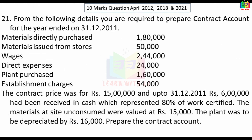Next problem: from the following details, prepare a contract account for the year ended 31-12-2011. The figures are: materials directly purchased Rs.1,80,000; material issued from stores Rs.50,000; wages Rs.2,44,000; direct expenses Rs.24,000; plant purchased Rs.1,60,000; establishment charges Rs.54,000; contract price Rs.15 lakh. Up to 31-12-2011, Rs.6 lakh had been received in cash, representing 80% of work certified. Materials on site unconsumed were valued at Rs.15,000. Plant was depreciated by Rs.16,000.